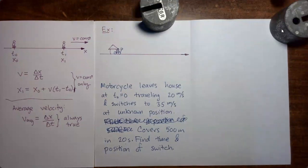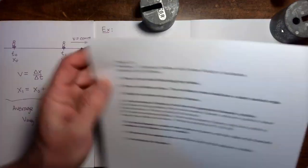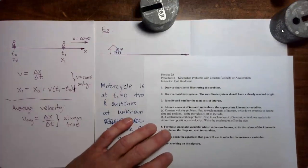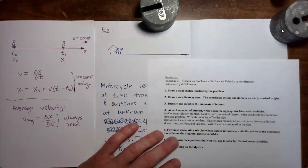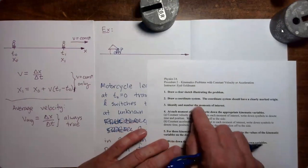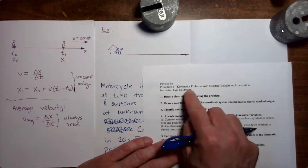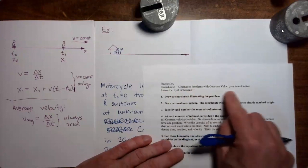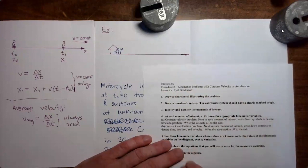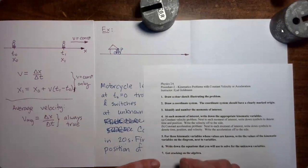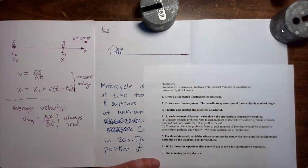We're going to go back to our handout that we used in the previous example problem. This is procedure two: kinematics problems with constant velocity or acceleration. This is available at the top of the module in the module introduction.